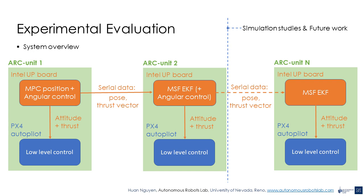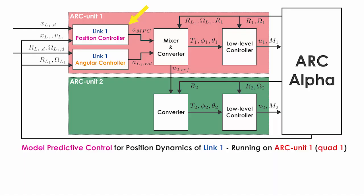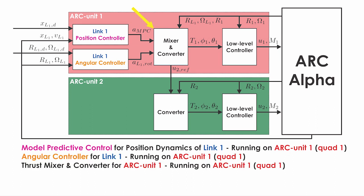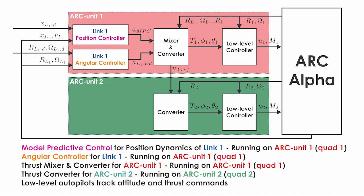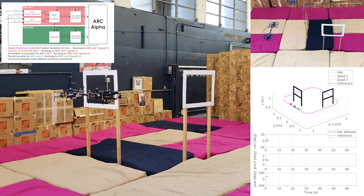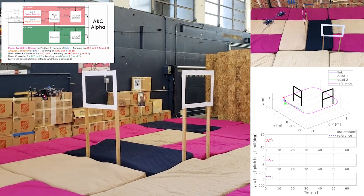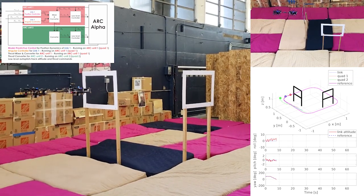Each ARC unit is equipped with an Intel UP board computer that runs the MPC position controller and the angular controller, or only the angular controller, for the neighboring link at 50 Hz. Each ARC unit receives the thrust vector command and the pose update from the previous ARC unit. The thrust vector command is converted to an attitude thrust command and sent to the autopilot, while the pose update is fused with IMU data through the utilized multi-sensor fusion framework. We have realized an experimental prototype called ARC Alpha, consisting of two ARC units — one carrying a RealSense tracking camera and the other carrying a FLIR Boson thermal camera.